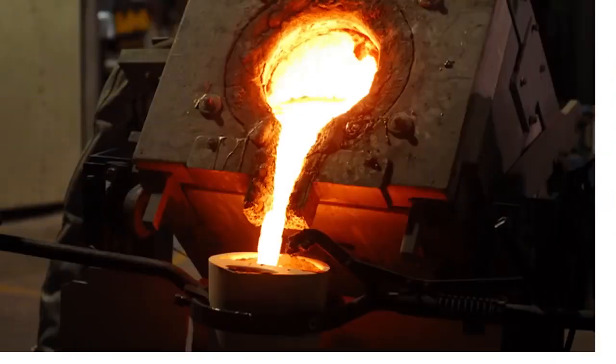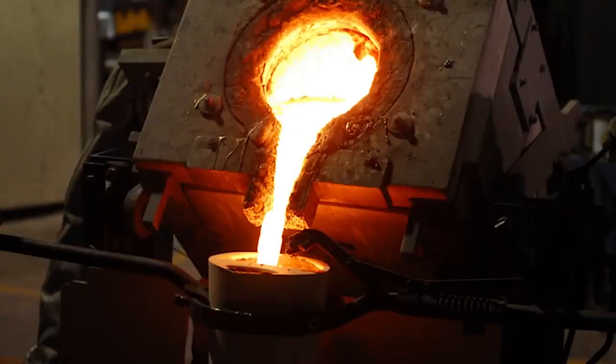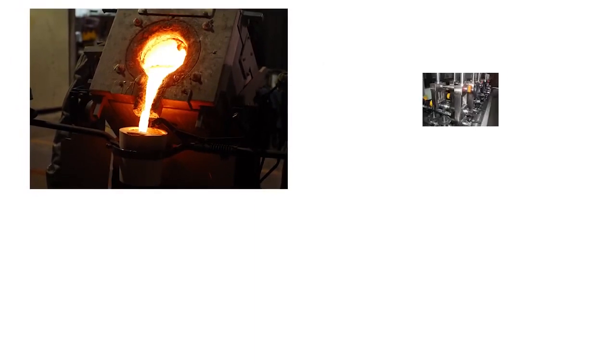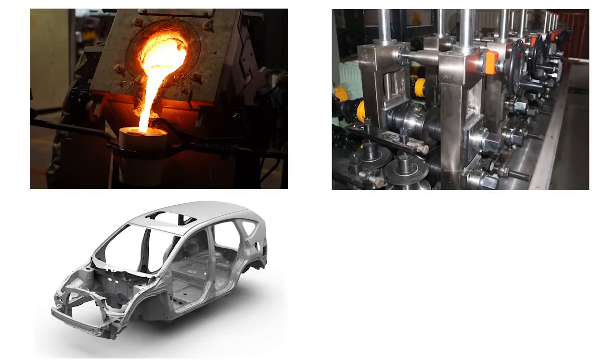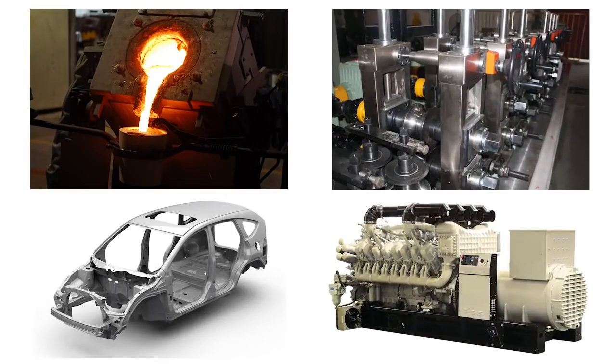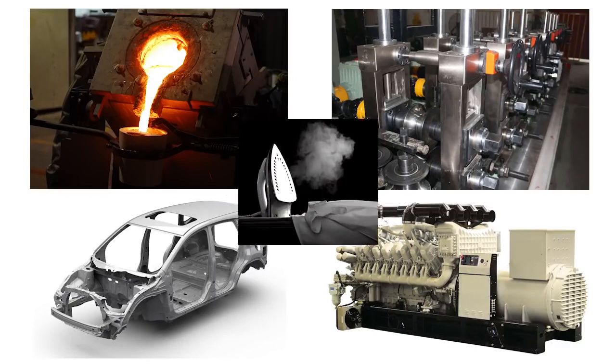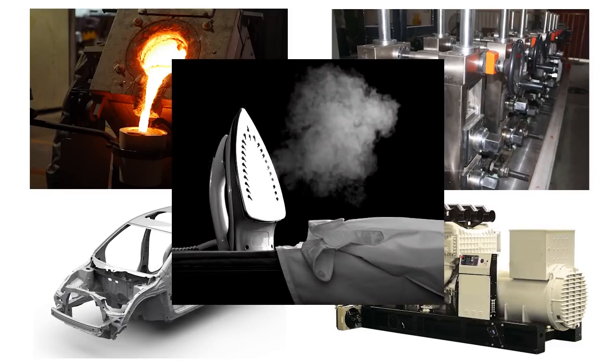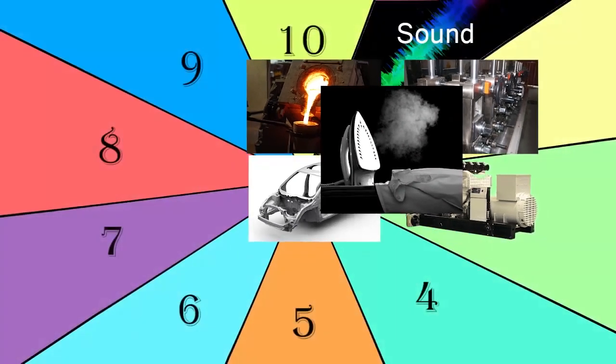Heat is used in the industry to melt metal and make various types of heavy-duty machinery like automobiles and generators. It is also used in household appliances like the electric or steam iron. Heat and its properties is an important topic of physics as well.